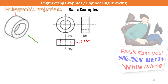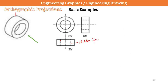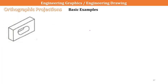Similarly, if I see from the side view — since it is from the left side, it has been drawn as the left-hand side view — we can see a rectangle piece, and the inner hole we cannot see. That's why we will represent this as a hidden line. So: front view, top view, side view.